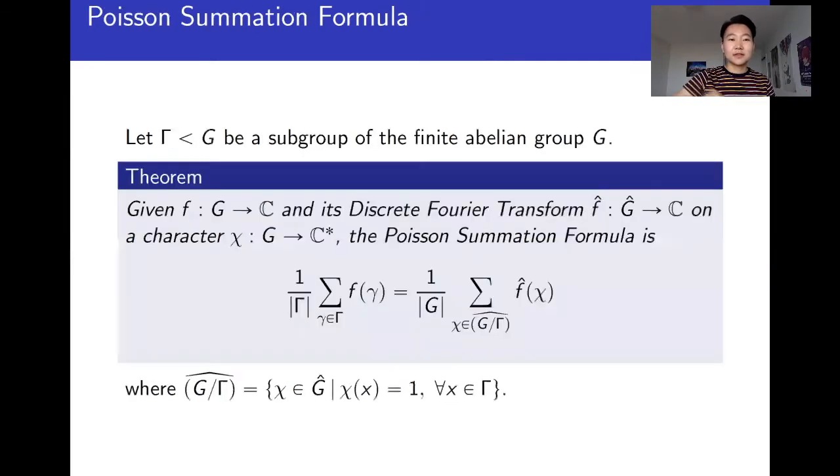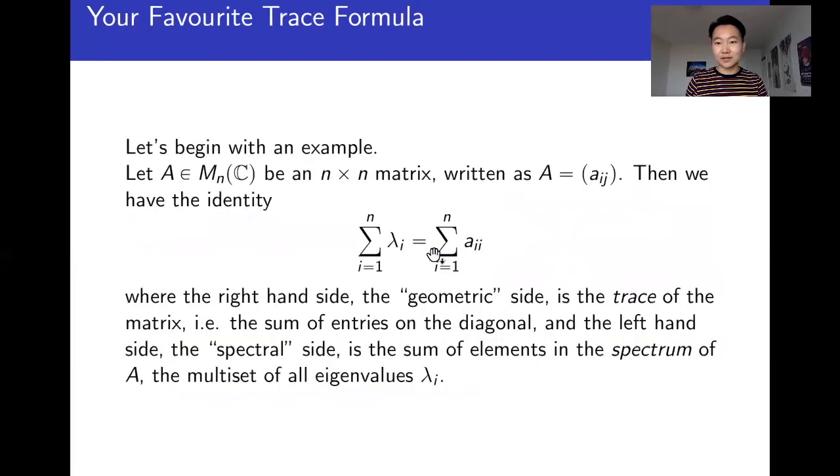And this is an important fact that we can take advantage of as a proof technique. So this is a famous formula called the Poisson summation formula. We take a finite abelian group G and some subgroup gamma to give some function F, and then we're able to relate its discrete Fourier transform with F itself in this way.